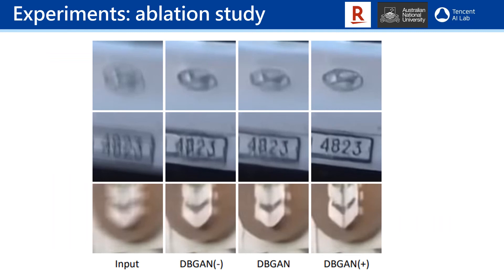In this slide, we show examples of de-blurring images generated by different models. The first column shows the input blurry images, and the next three columns show the de-blurred images produced by DBGAN-minus, DBGAN, and DBGAN-plus. DBGAN-minus is trained without the relative blurring loss and only contains the process of learning to de-blur, while DBGAN-plus is our full model.